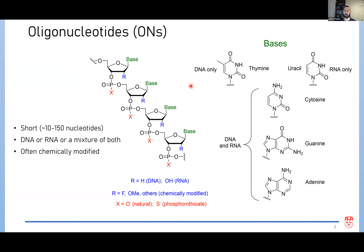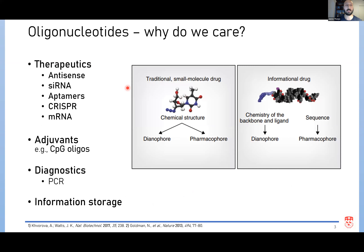We can also have modifications at the nucleobases as well — there's a huge range of different chemical modifications that can be applied to oligonucleotides. Here at the Oligonucleotide Therapeutic Society, the reason we care about oligonucleotides is mainly for therapeutic applications. There are many different mechanisms that oligonucleotides can use as therapeutics: antisense, siRNA, aptamers, emerging CRISPR technology, and of course mRNA.